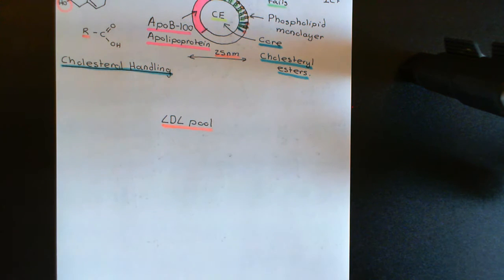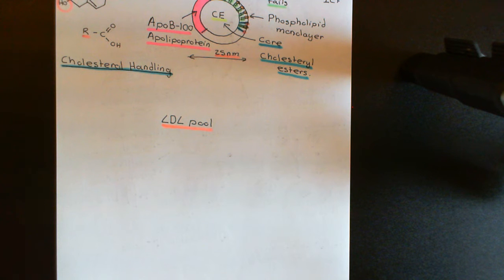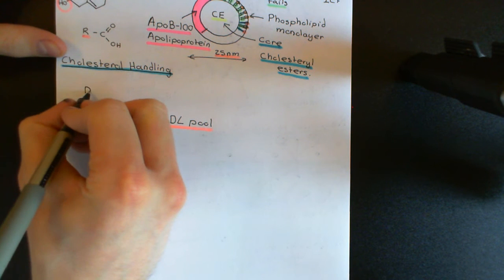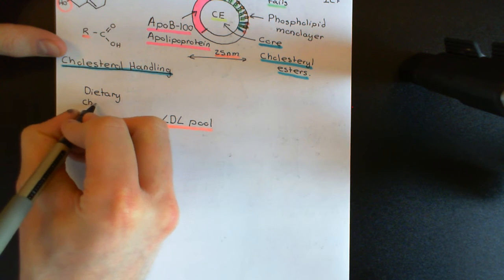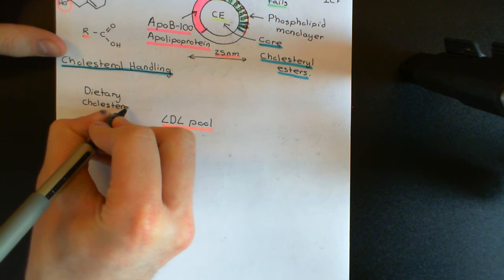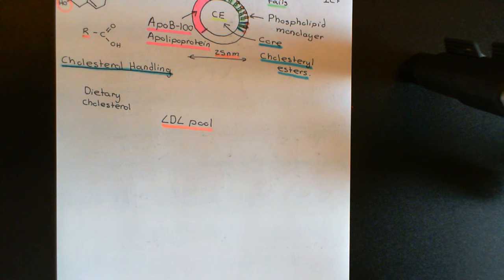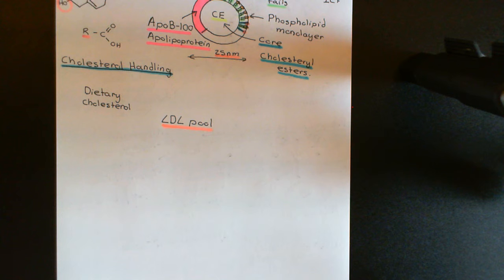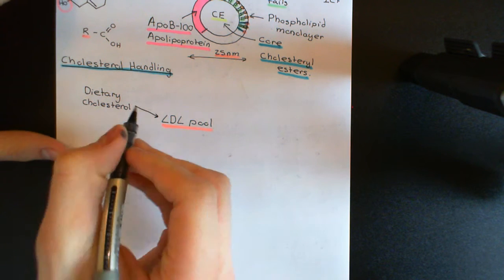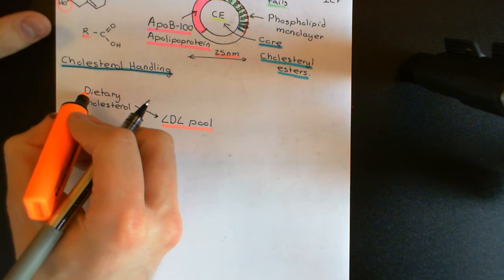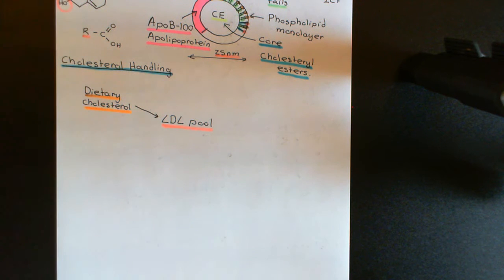When you eat dietary cholesterol, through a huge number of steps — and this is where I'm hugely simplifying it — when you eat more dietary cholesterol than you actually need, this cholesterol is going to be stored in the LDL pool. Because cholesterol is fat-soluble, it's going to be in foods that contain a lot of fat. Things like butter and other dairy products contain a large amount of cholesterol. So, dietary cholesterol is then added to the LDL pool — stored in this floating store of cholesterol in your blood.